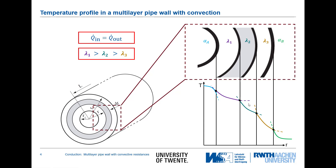A location not considered in a prior video is the inner part of the pipe, where we have a heat transfer coefficient from the liquid inside to the surface. Here we have our typical profile for convection: a high gradient close to the wall where heat is mainly transported by conduction due to the zero-slip boundary condition and the non-moving liquid. Further into the liquid, advective motion increases and the temperature gradient decreases.